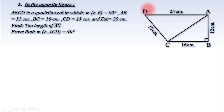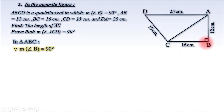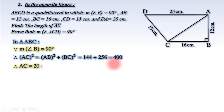In this problem, ABCD is a quadrilateral in which the measure of angle B equals 90 degrees, AB equals 12 cm, BC equals 16 cm, DC equals 15 cm, and AD equals 25 cm. Find the length of AC, then prove that the measure of angle ACD equals 90 degrees. In triangle ABC, since the measure of angle B equals 90 degrees, AC power 2 equals AB power 2 plus BC power 2, which equals 12 power 2 plus 16 power 2 equals 400. Therefore, AC equals the square root of 400 equals 20 cm.